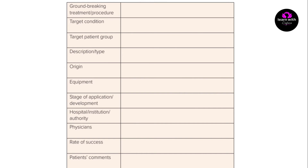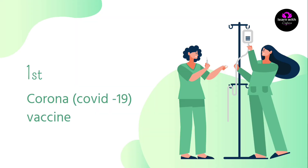'Description, type, origin' — الوصف أو النوع. 'Equipment' — الأدوات. 'Stage of application/development' — مرحلة التطبيق أو التطوير. 'Hospital/Institution' — المستشفى أو المؤسسة. 'Authority' — الهيئة. 'Physician' — الأطباء. 'Rate of success' — معدل النجاح. 'Patient comments' — تعليقات المرضى.